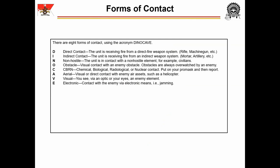There are eight forms of contact. The easiest way to remember them is the acronym DINOCAVE. Direct contact is contact when the unit is receiving fire from a direct fire weapon system, for example a rifle or a machine gun. Indirect contact is when the unit is receiving fire from an indirect weapon system — think mortars and artillery.